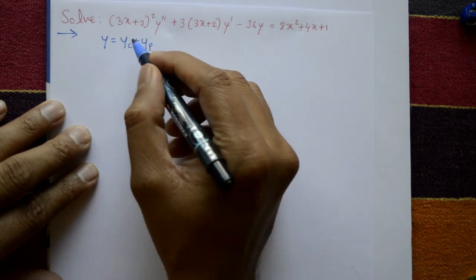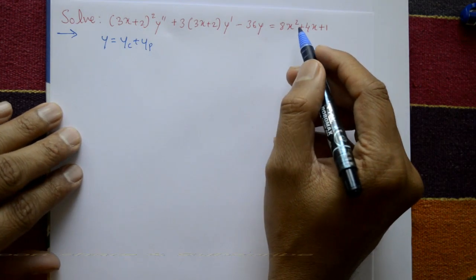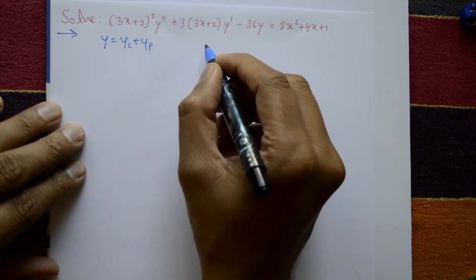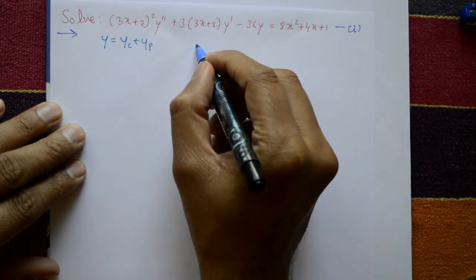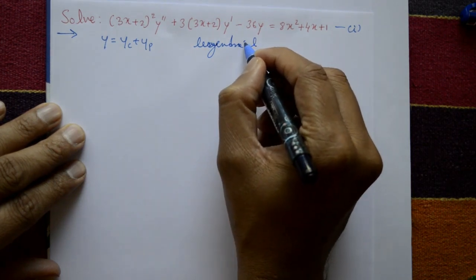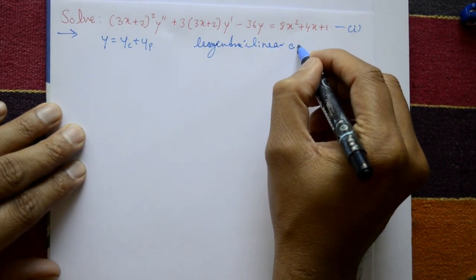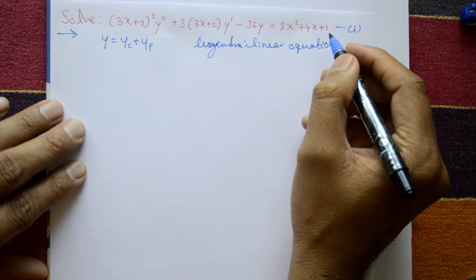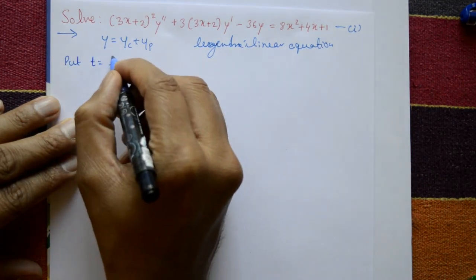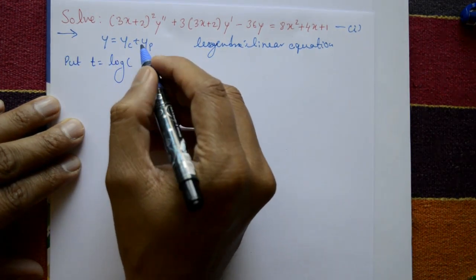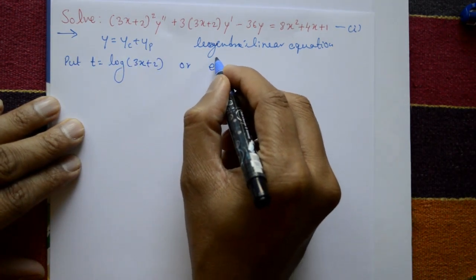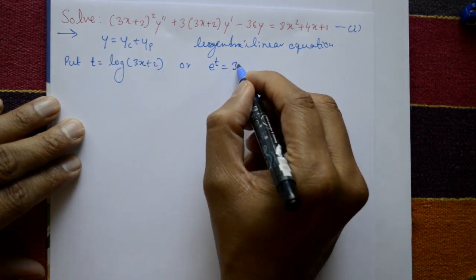Finding the complementary function first, we use Legendre Linear Equation steps. This is a standard form of Legendre Linear Equation, call this equation number 1. Now put t = log(ax + b), where ax + b means 3x + 2. Or, e^t = 3x + 2. Solving for x gives x = (e^t - 2) / 3.